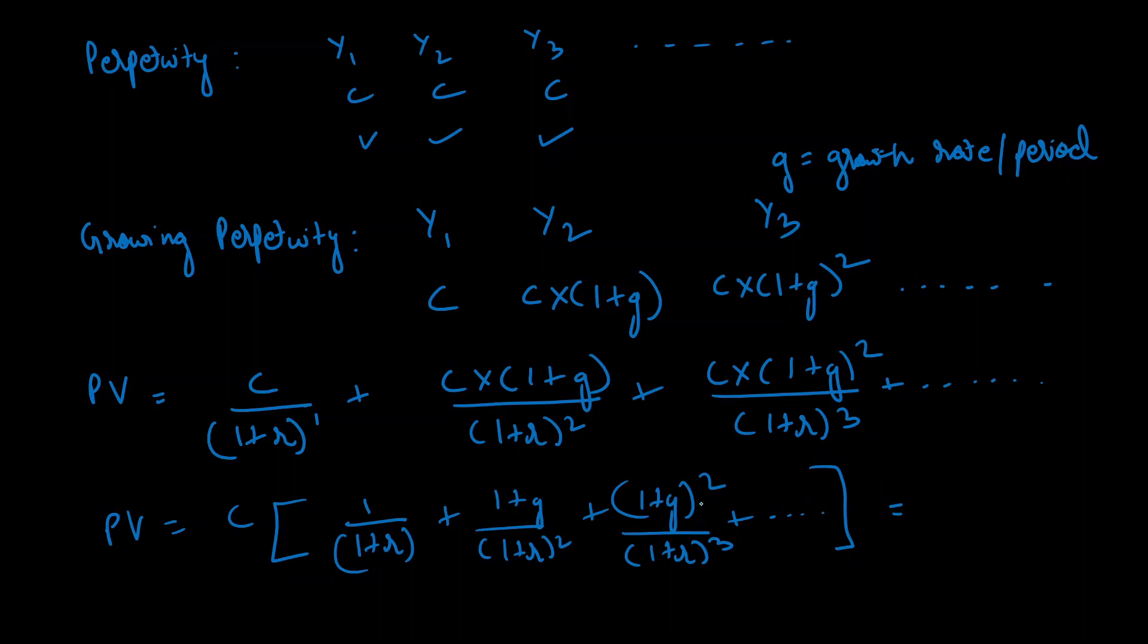Now this geometric progression within brackets simplifies to 1/(r - g), so the present value becomes c times 1/(r - g). I'm leaving the derivation out in this video because I don't want to make it more mathy than it already is. I'll make a separate video about deriving this in case you don't want to accept this answer just like that.